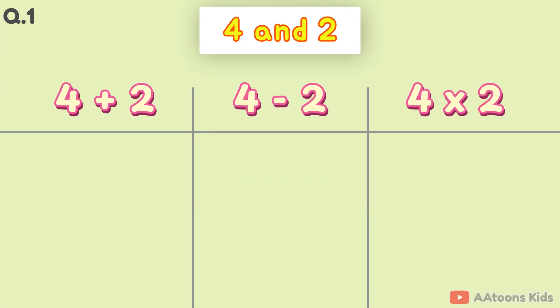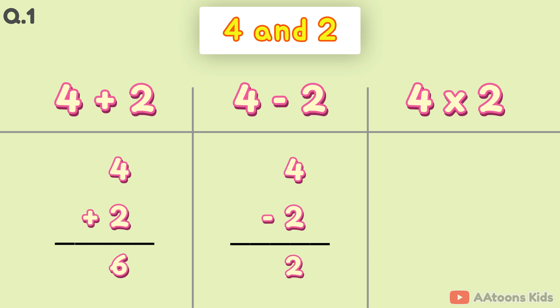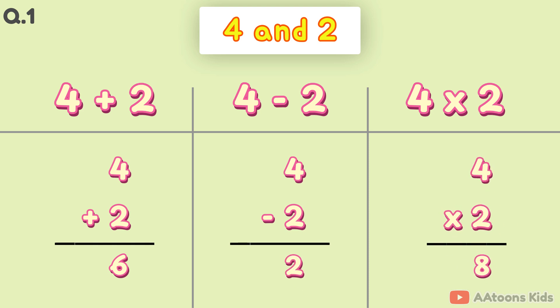Let's add them. 4 plus 2 is 6. 4 minus 2 is 2. 4 times 2 is 8.